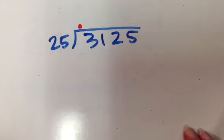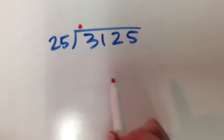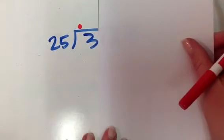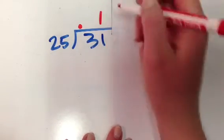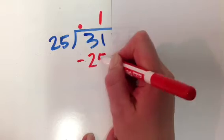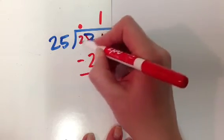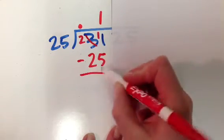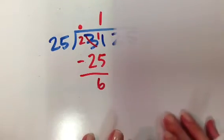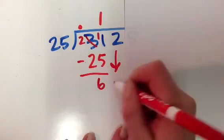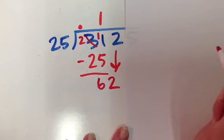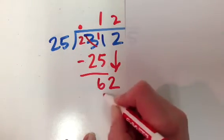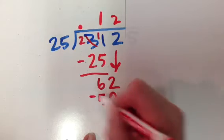And treat this like I was dividing whole numbers. So 25 can't go into 3, but it could go into 31, right? It could go in there one time, minus 25, which is 6. Slide over. I'm going to drop the 2 down.